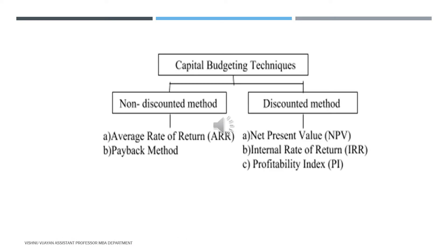The types of capital budgeting techniques: mainly two types. First, the non-discounted method, which includes the payback period method and the average rate of return (ARR). Second, the discounted method, which includes the net present value method, internal rate of return, and profitability index — five types in total, as per the KTU syllabus.